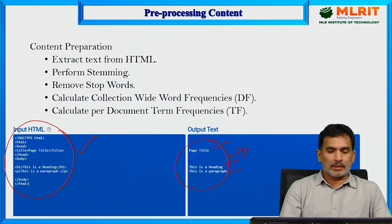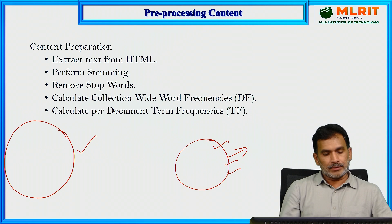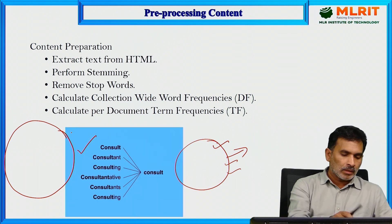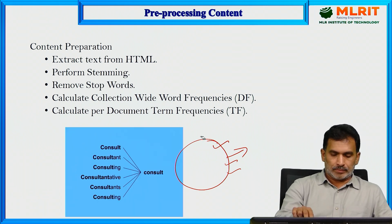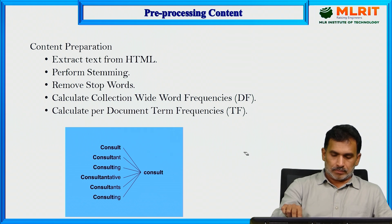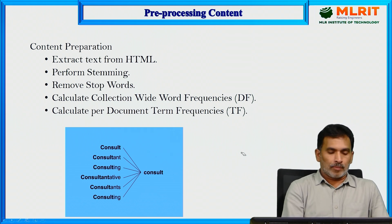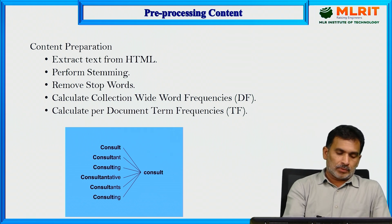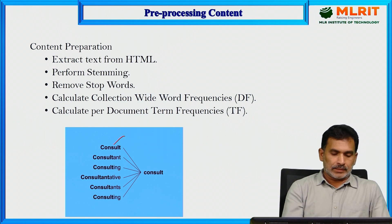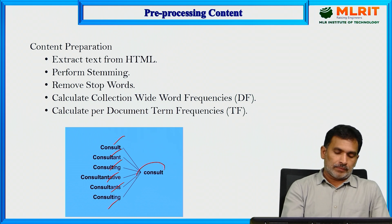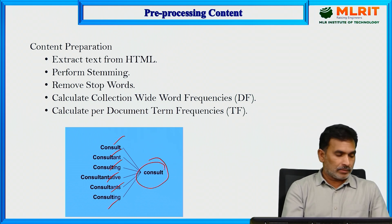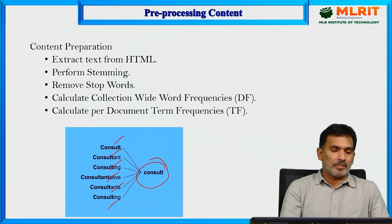Next, stemming is performed to identify the root word of a given word. For example, words like consult, consultant, consulting, consultative, and consultants all share the root word 'consult'. Stemming reduces these variations to their common root form.